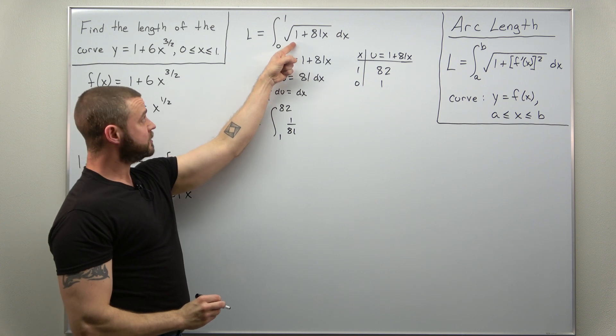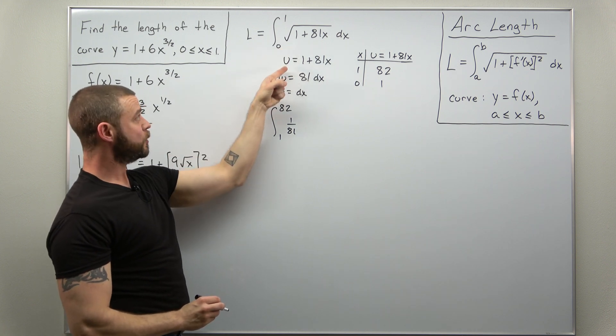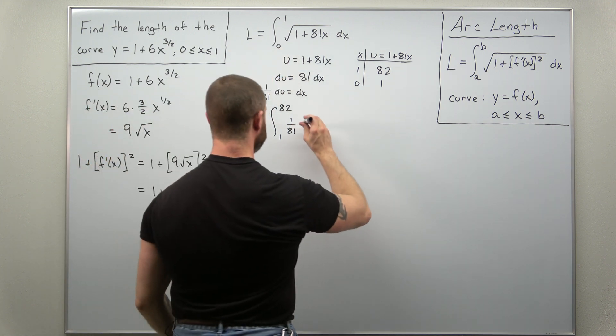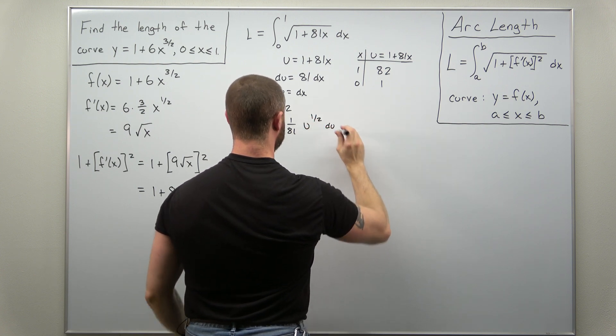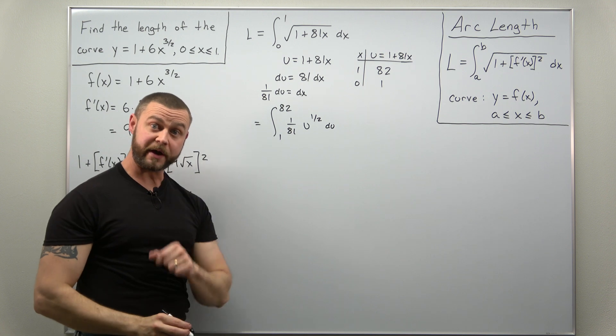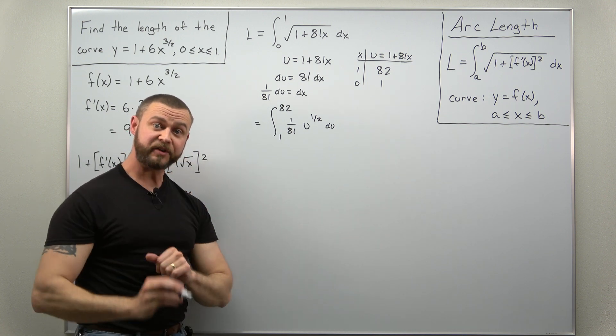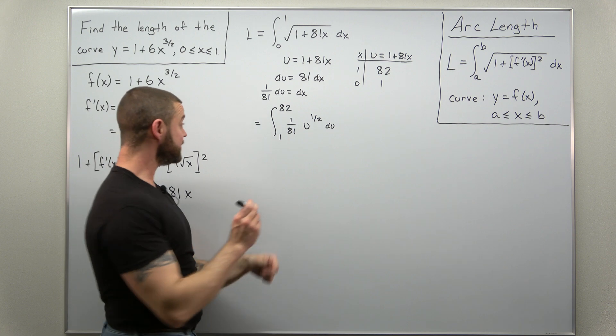And the square root expression, just replace the inside there with your substitution, you'll get square root of u. And I'll write that as u to the one half. That way we can apply the power rule. From here, basic power rule to evaluate this integral.